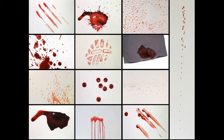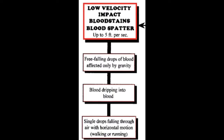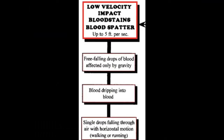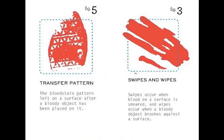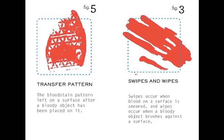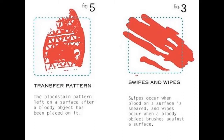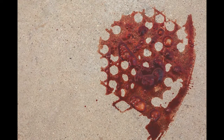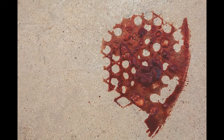Bloodstains are often separated into three different categories. The first is passive stains, which typically occur from gravity acting on the injured person and appear as drops, flows and pools of blood. The second category is transfer stains, which appear from contact with an existing bloodstain and are referred to as wipes, swipes and pattern transfers — for example, a bloody footprint, blood-stained clothing or smeared blood from dragging a body.